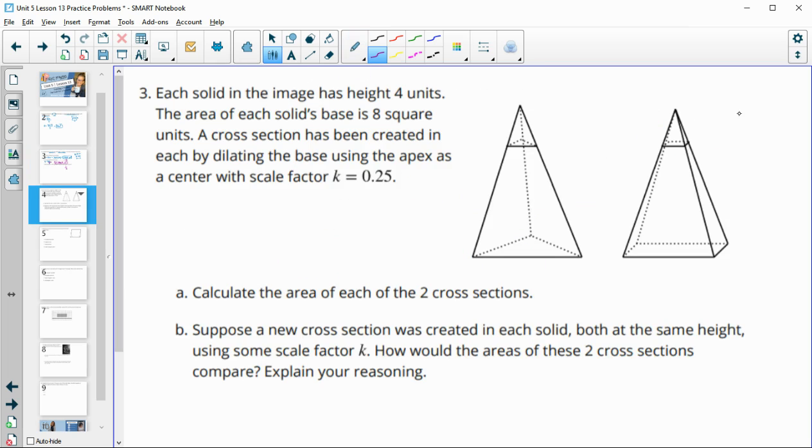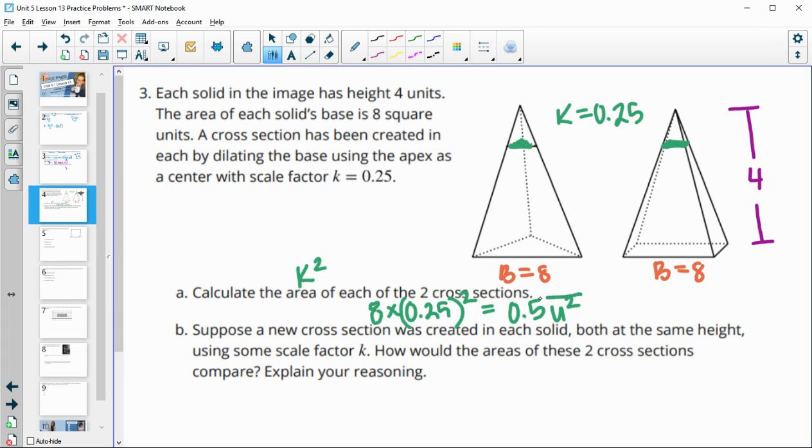Number three, each image has a height of four units and base areas that are eight. Then we see this cross section created here from a scale factor of 0.25, and it wants us to find the areas of these. So to find the area given a dilation, you would multiply by k squared. So we're just going to take the base area, eight, and multiply it by 0.25 squared. And that's going to give us our new area of 0.5 units squared. That's going to happen in both of these, since both of these have a base area of eight. So this one's going to be 0.5 units squared as well.